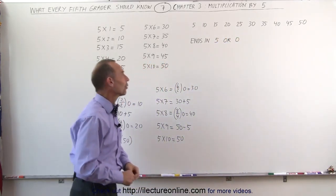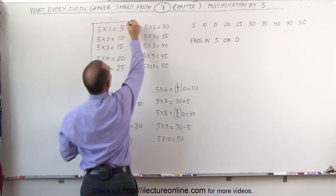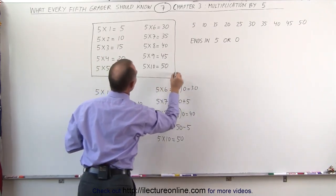That seemed fairly straightforward and fairly easy, and that's what the multiplication tables indicate. If you take a look at all the answers, you can see that it always ends either in a 5 or a 0.